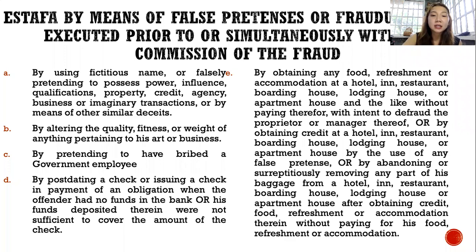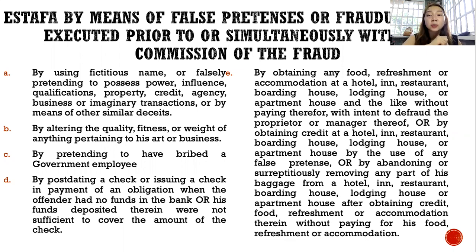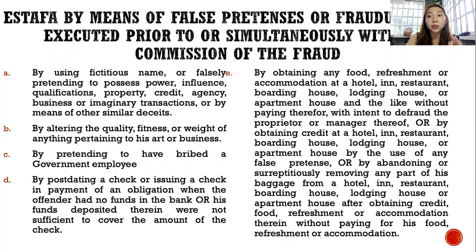Estafa by means of false pretenses or fraudulent acts executed prior to or simultaneously with the commission of the fraud. There are five punishable acts. First, by using a fictitious name or falsely pretending to possess power, influence, qualifications, property, credit, agency, business, or imaginary transactions, or by means of other deceits — pretending to have a capability you don't actually have. Second, by altering the quality, fitness, or weight of anything pertaining to one's art or business. Third, by pretending to have bribed a government employee. Fourth, by post-dating a check or issuing a check in payment of an obligation when the offender had no funds in the bank or insufficient funds to cover the check.